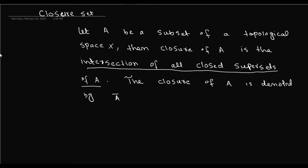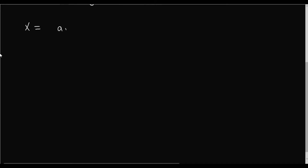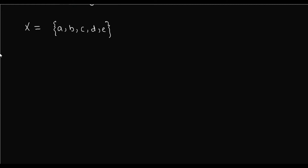To illustrate closure of a set, it can be best explained by an example. The set X is given as X = {a, b, c, d, e}. These are the elements in X. We take the collection τ, and in this collection the elements are: the empty set φ, {a}, {b}, {c}, {a,b},